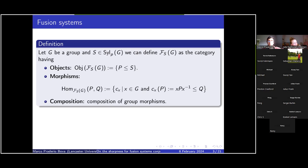So let's start with the definition of fusion systems. Fusion systems were first introduced by Puig as a means of having a common framework between p-fusion of blocks and the p-local structure of finite groups. The most common example of a fusion system is given by taking a group G and a Sylow-p subgroup S of the group G, and defining a category F_{S,G} whose objects are subgroups of S and whose morphisms between two subgroups P and Q are given by conjugation by an element in G that sends P to a subgroup of Q.